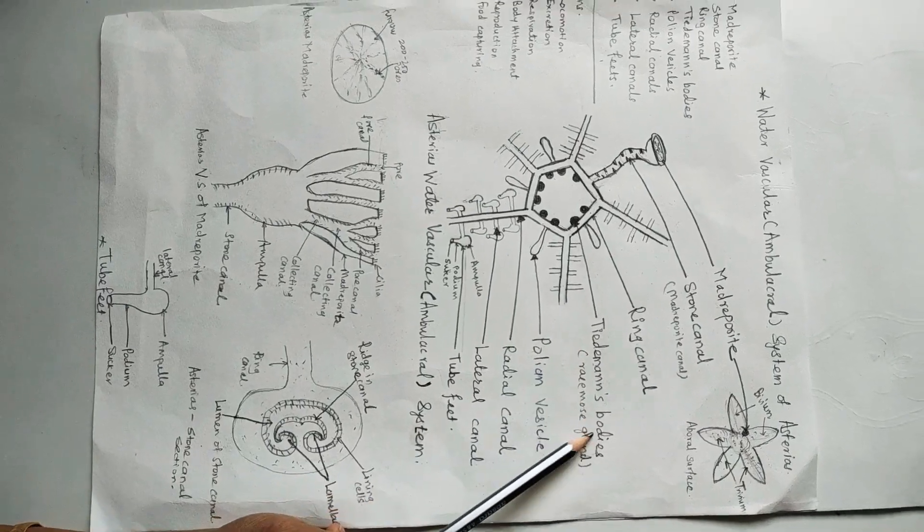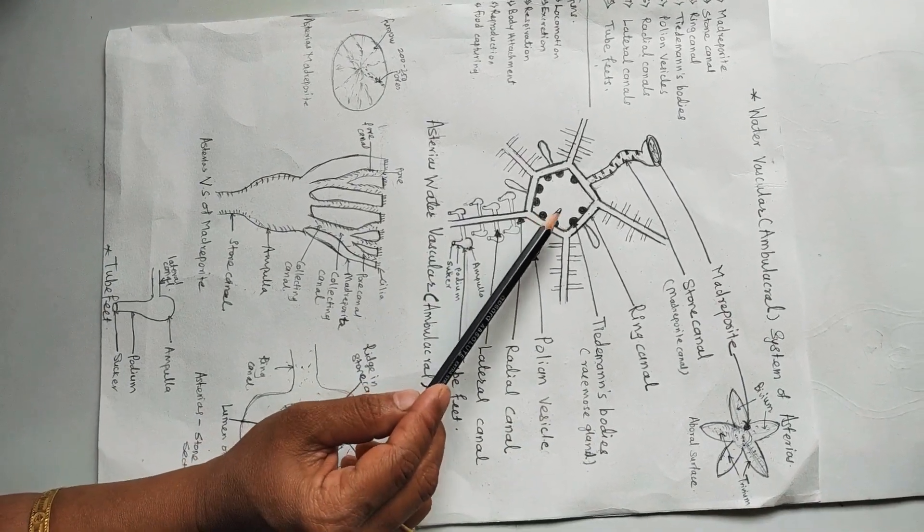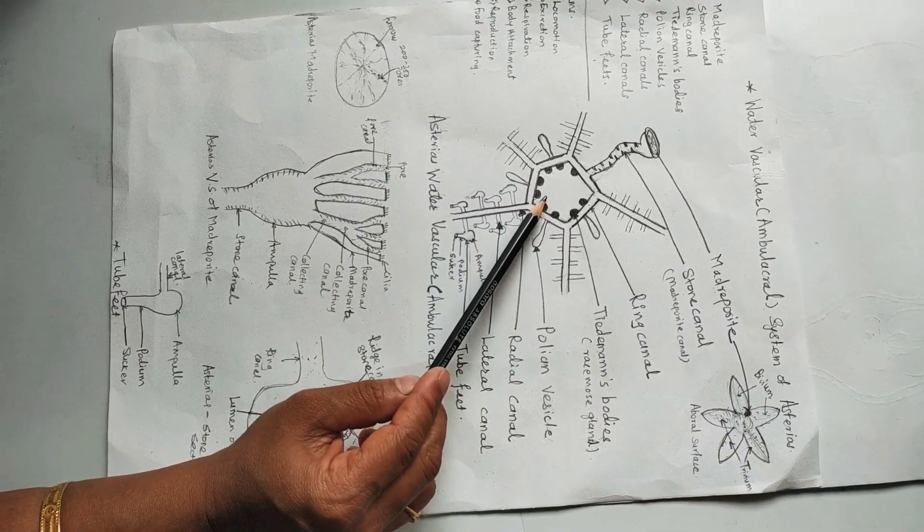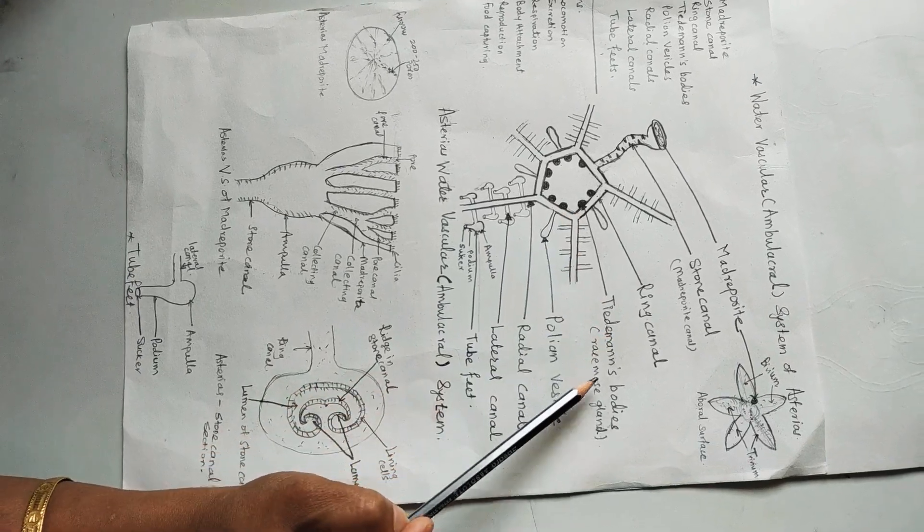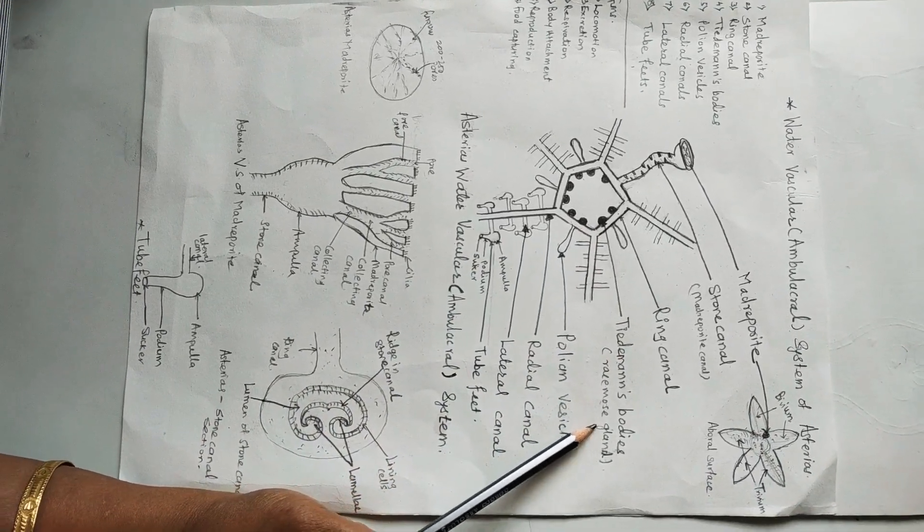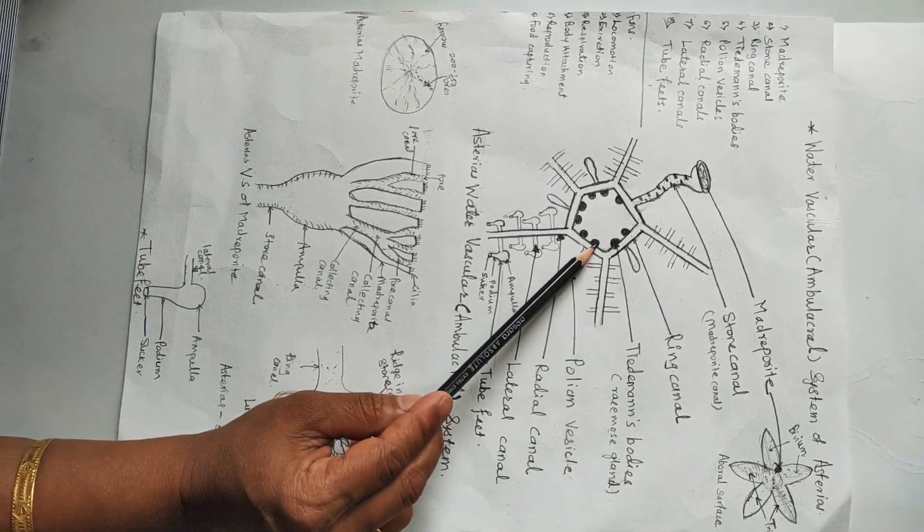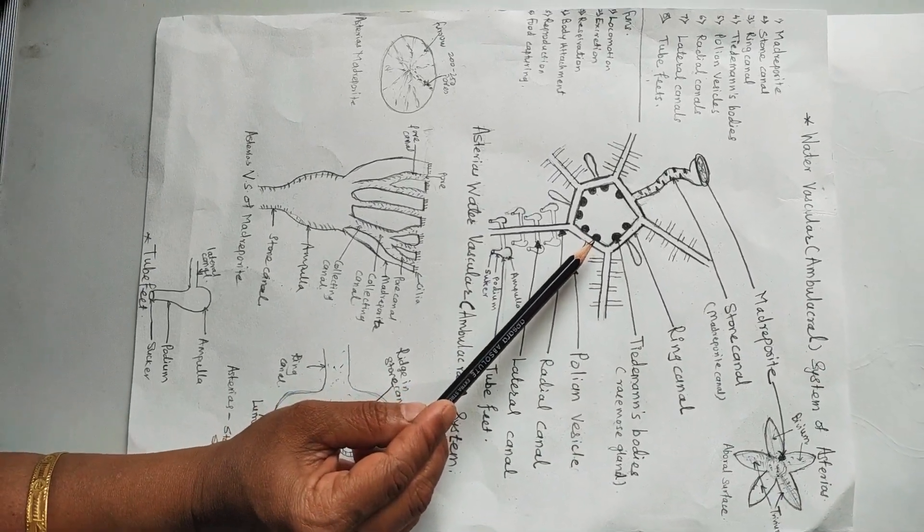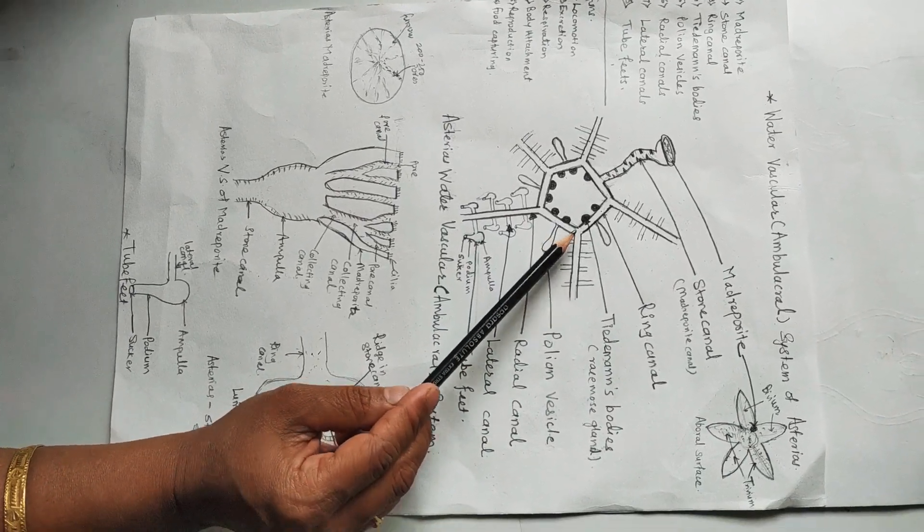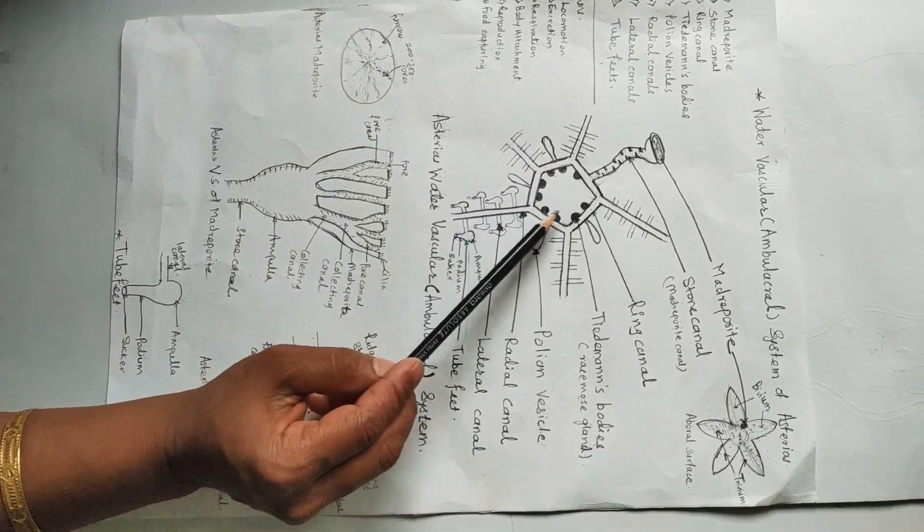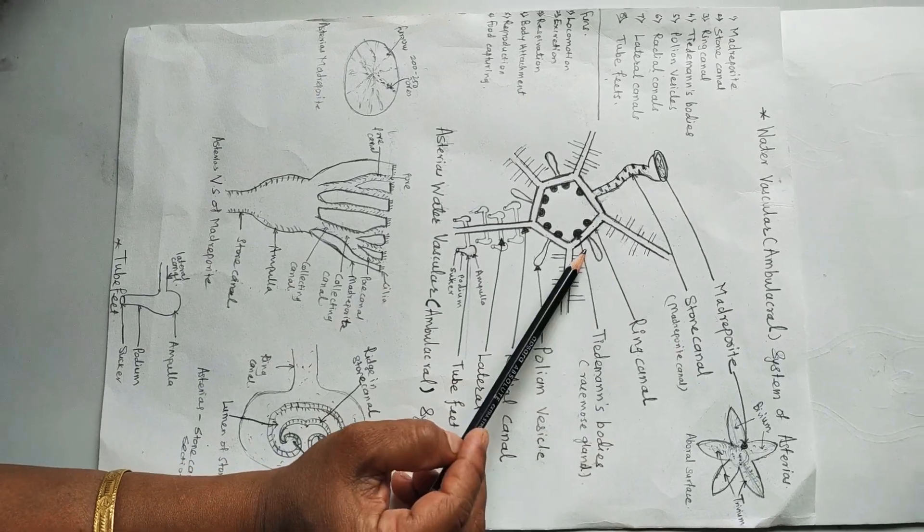Next part is Tiedemann's body. The ring canal on its inner side gives off a pair of small vesicles that is called Tiedemann's body, or it is also called racemose glands. These are small yellowish irregular rounded glandular bodies. There are about nine Tiedemann's bodies. The tenth position is taken by the opening of the stone canal.